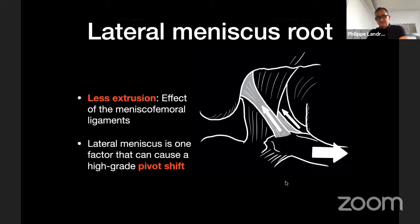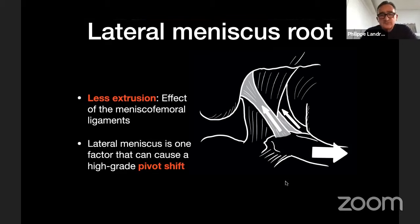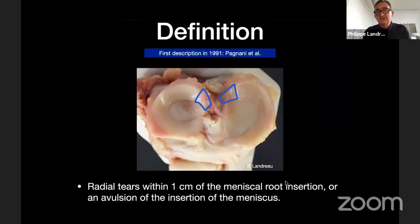Another specific point on the lateral meniscus: when there is a pivot shift after an ACL rupture, there is increased displacement of the lateral tibial plateau. We now know that a lateral meniscus root tear further increases the pivot shift, because there is no more control of this displacement — the lateral meniscus becomes even more mobile than it already is naturally.